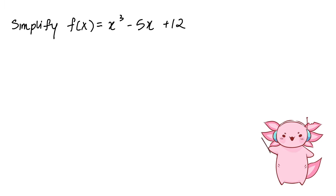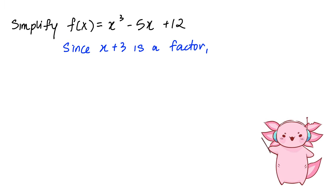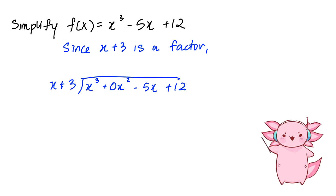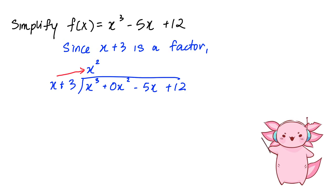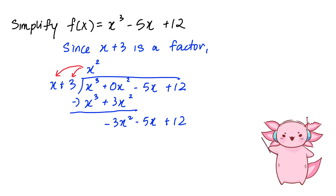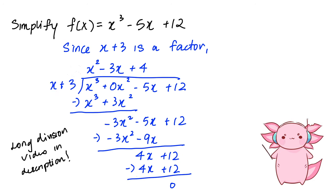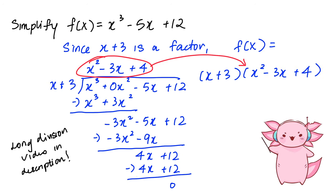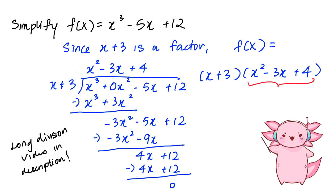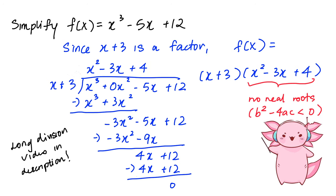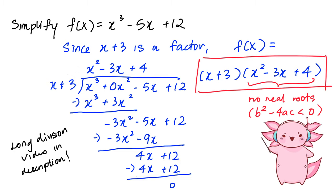Also, if the question wants you to simplify f(x) and x + 3 is a factor, we can do long division to factorize f(x). And if the resulting quadratic like x² − 3x + 4 has no real roots, it can't be simplified further — so that's our final factorization.